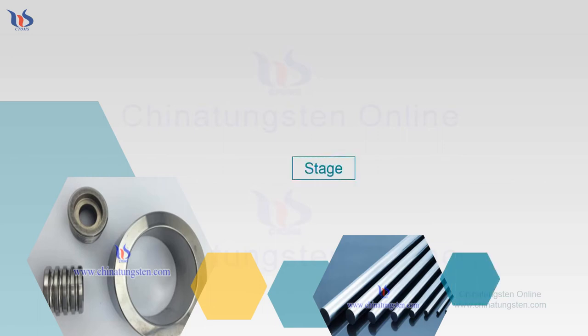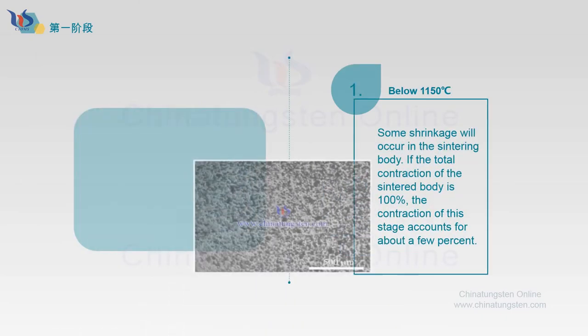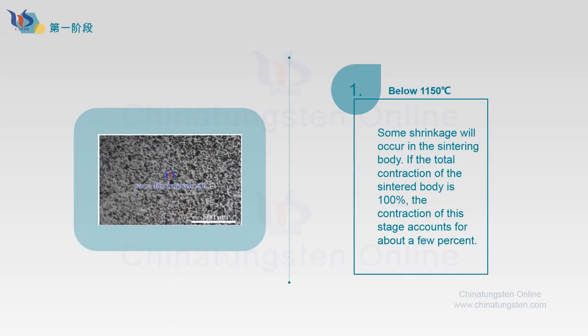In the first stage, the temperature is below 1150 degrees. Some shrinkage will occur in the sintering body. If the contraction of the body is 100%, the contraction of this stage accounts for about a few percent.